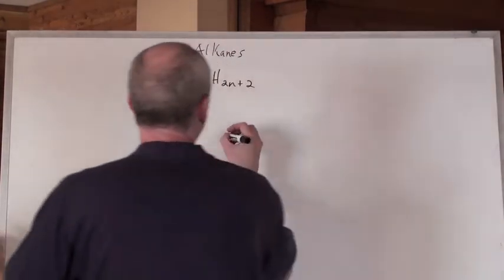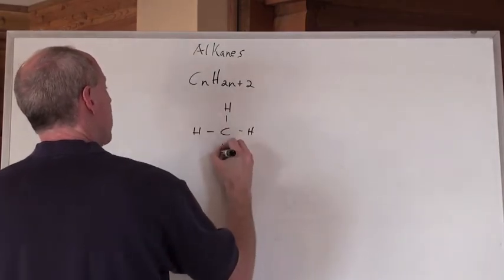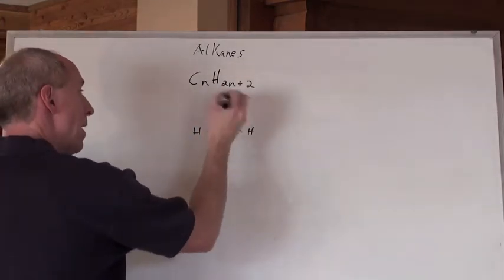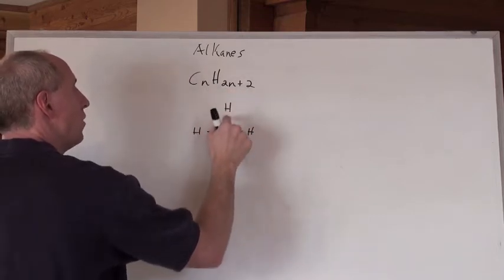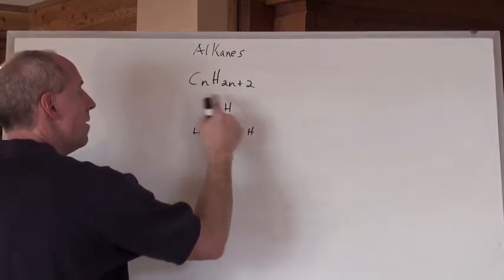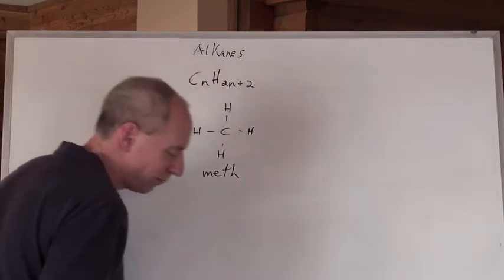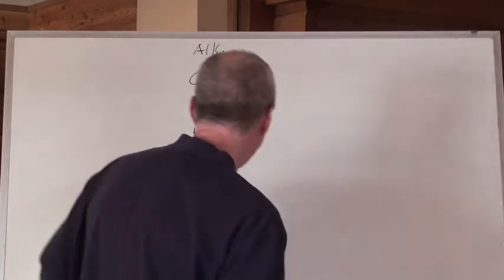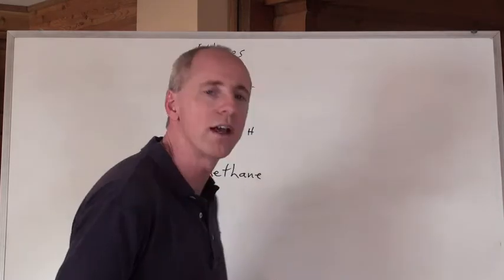When you look at this formula right here and you say, okay, got myself that Lewis diagram right there where we've got obedience of this general formula, one carbon, so we've got twice as many hydrogens plus two more. That formula right there, because it's got one carbon in it, is meth. And because it's single-bonded, that hydrocarbon is called methane. That's CH4. That's methane.